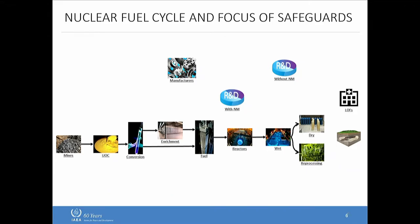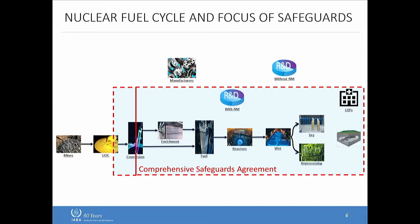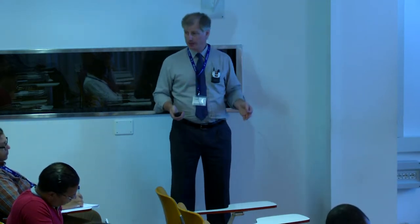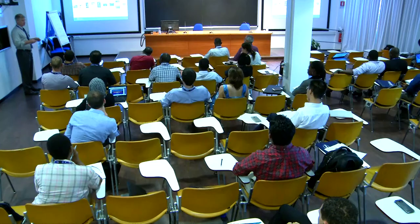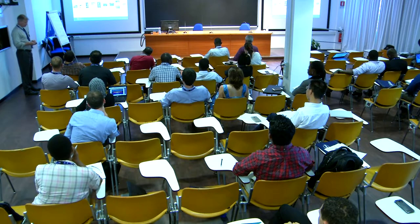Under a comprehensive safeguards agreement, safeguards generally start at the conversion stage. Manufacturing is outside safeguards, as is R&D without nuclear material. The comprehensive safeguards agreement, part of the NPT, came out in the early 1970s, and the CSA agreements started in the mid-1970s — but it wasn't so comprehensive because it didn't cover everything. This was found to be a weakness in the late 1980s and early 1990s, as seen in case studies like Iraq, Libya, and other countries.